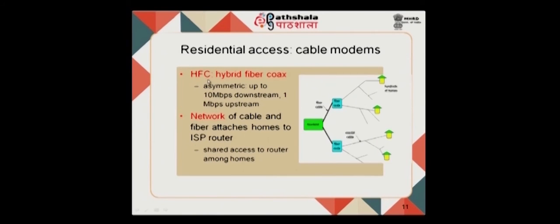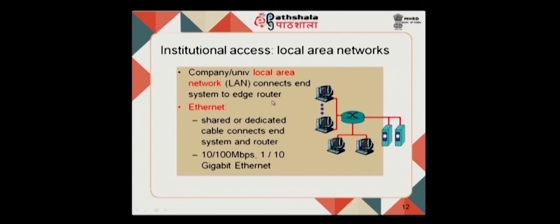Other residential access options include cable modems through hybrid fiber coaxial cables, also asymmetric — with downstream speeds of 10 Mbps and upstream of 1 Mbps. Upstream is typically lower because we generally download far more data than we upload. Another option uses a network of cables and fibers connecting homes to ISP routers, providing shared access.